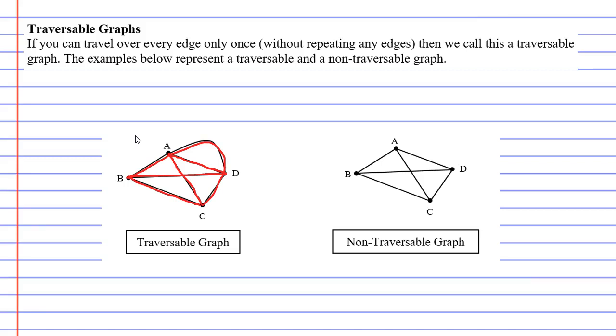The one that is non-traversable, let's have a go at this one. If I draw over the edges, like so, I can draw over most of the edges except for one. In order to draw over the edge from D to A, I would have to take my pen off the paper. Therefore, it is a non-traversable graph.